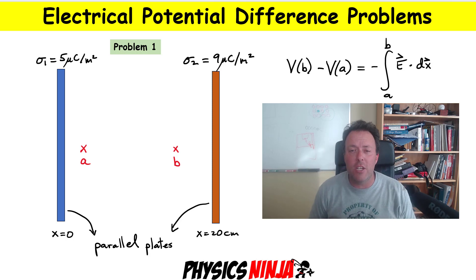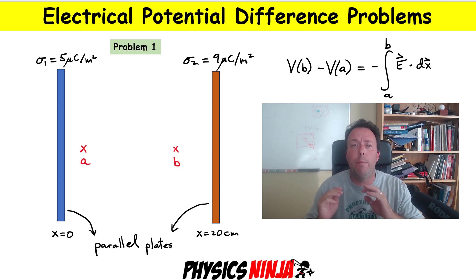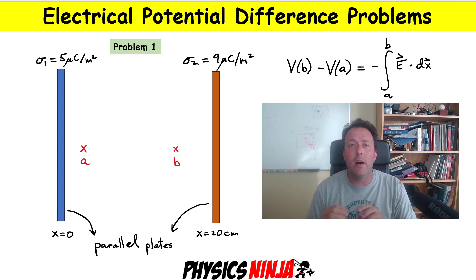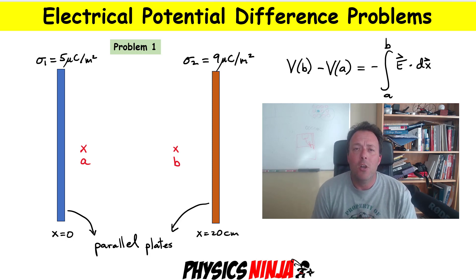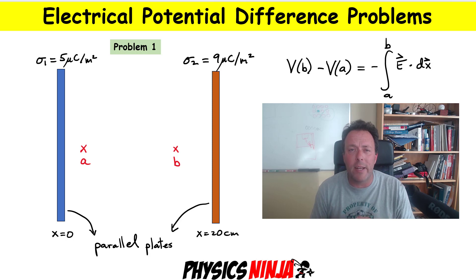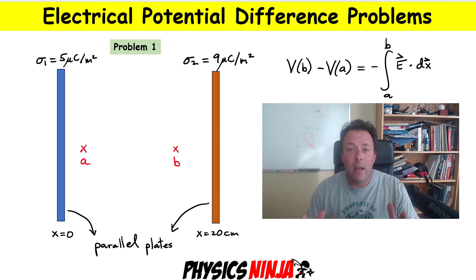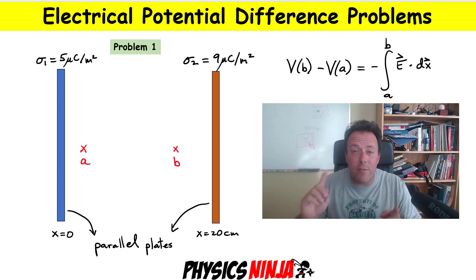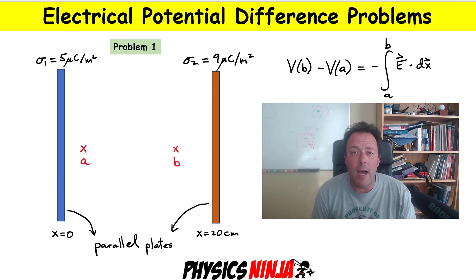I'm going to show you how to use the equation above my head here. It says that the potential difference between two points — I'm choosing A and B — is equal to minus the integral of the electric field scalar product with the displacement. In the first problem, we're going to consider the case illustrated next to me: two charged plates, both with positive charge density, but different amounts of charge per unit area. The goal is to find the potential difference between points A and B using that equation.